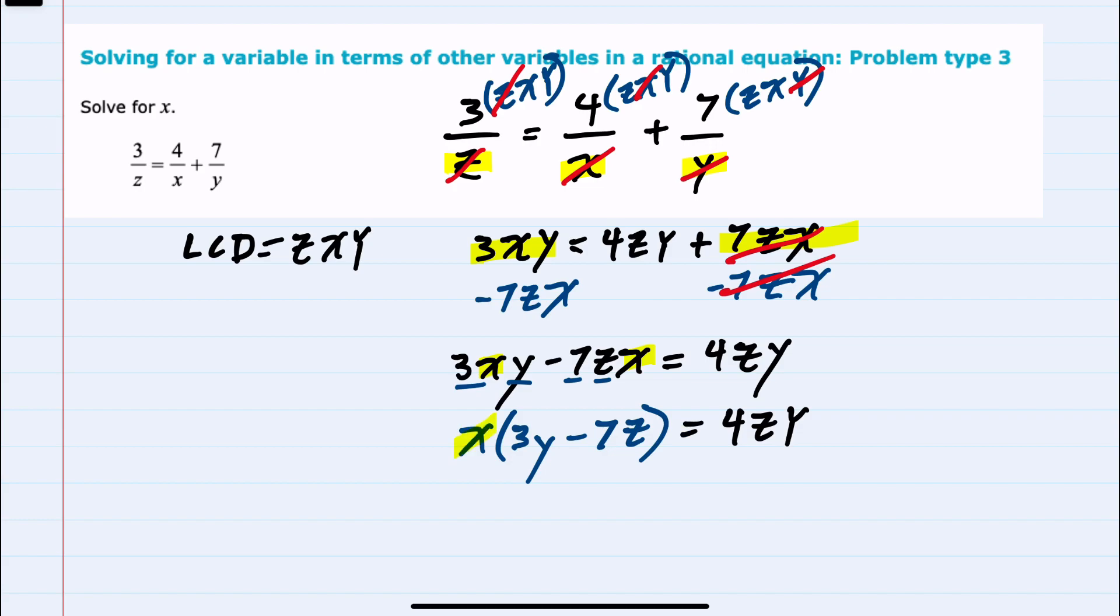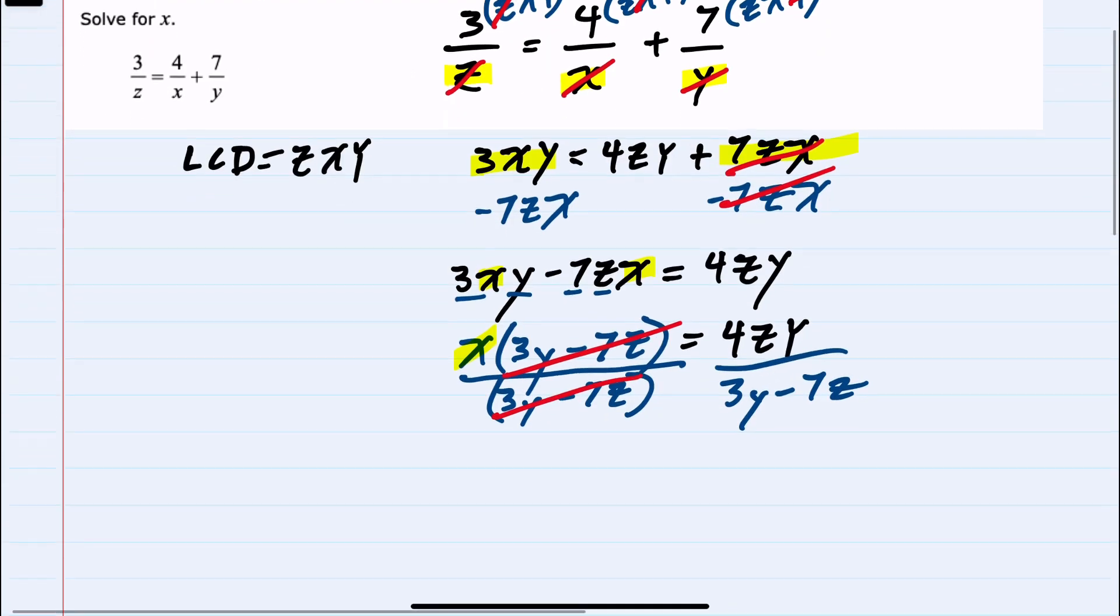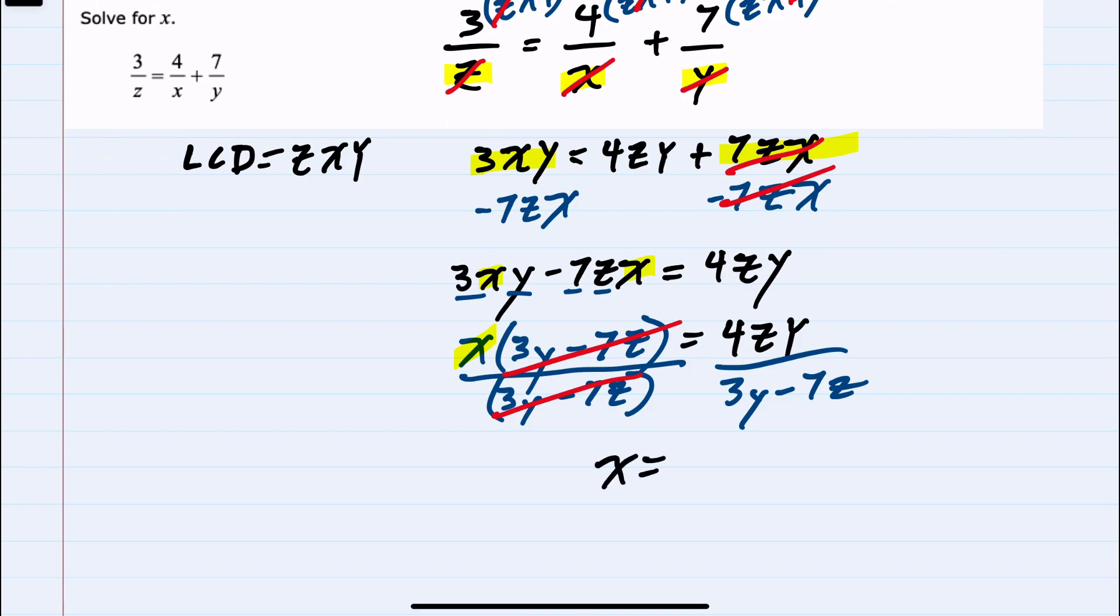Now that I have a single x, to solve for that x, I would want to divide both sides of this equation by 3y minus 7z to cancel on the left, giving me just the x. So we've isolated it by itself, and we have 4zy over 3y minus 7z on the right-hand side. We've solved for x.